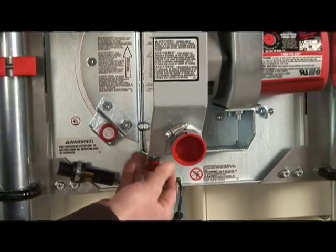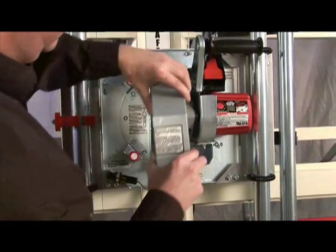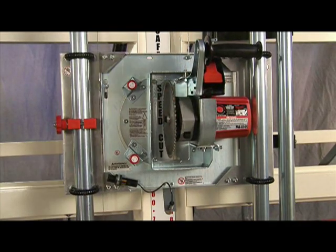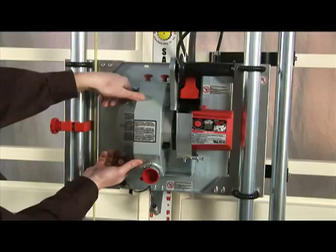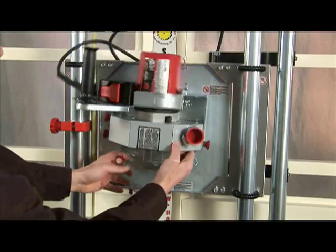A removable upper blade guard with dust port allows standard 8-inch blades with a 5/8-inch arbor to be changed quickly. Twin spring-loaded indexing pins assure positive locking of the power unit in the desired position.